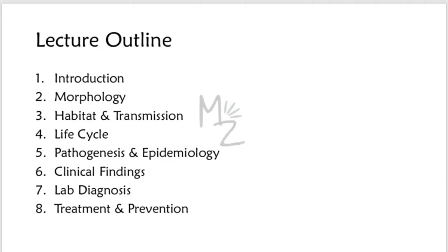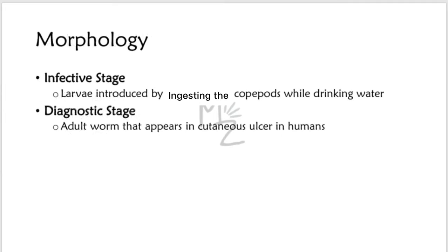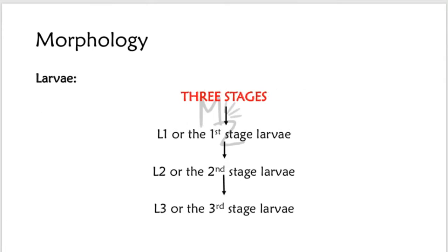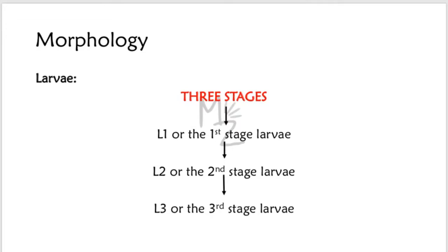Before starting the morphology in detail, the infective stage is larvae introduced when copepods are ingested in drinking water — these copepods contain the infective larvae. The diagnostic stage is the adult worm that appears in the cutaneous ulcers in the human body. The larvae has three stages: L1, the first stage; L2, the second stage; and L3, the third stage larvae, which is termed the infective larvae.